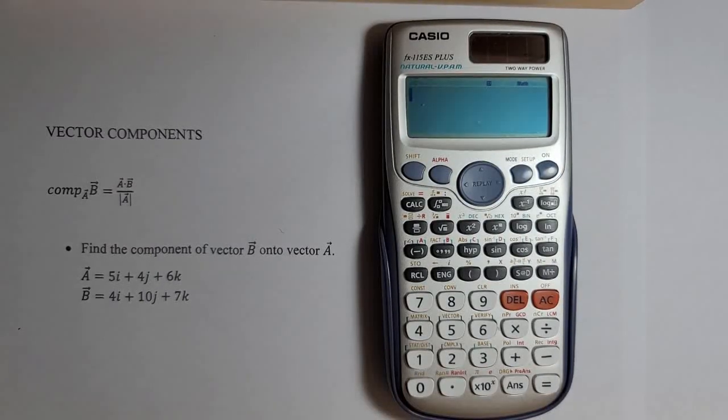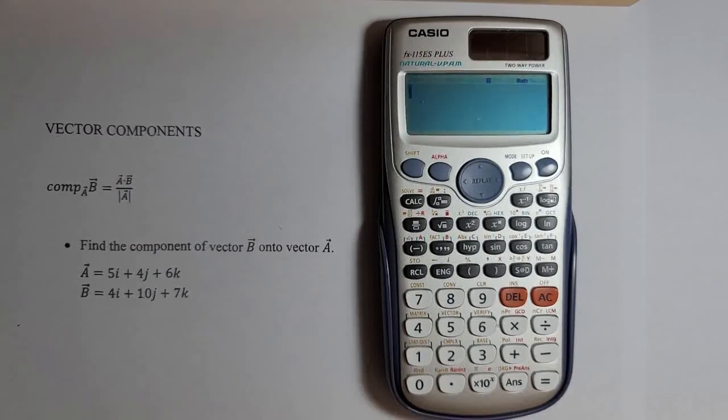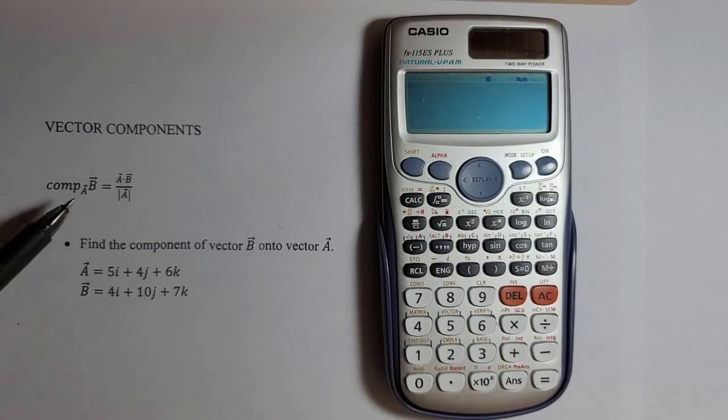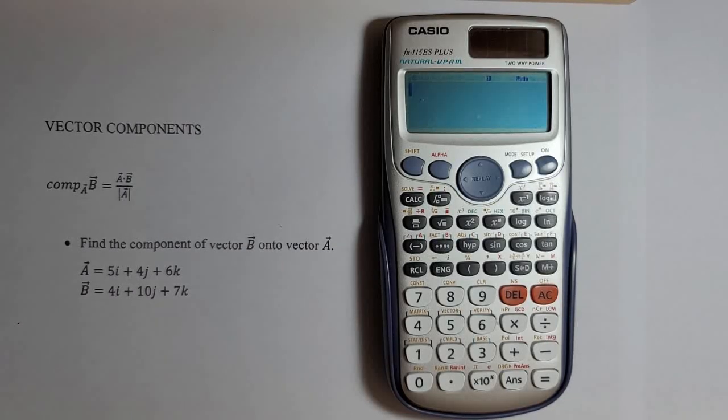Welcome everyone! Here is one video of how to find components of vectors along another vectors using the Casio FX calculator. So to figure out the component of vector B onto A, we take the dot product of the two vectors and we divide that by the magnitude of vector A.